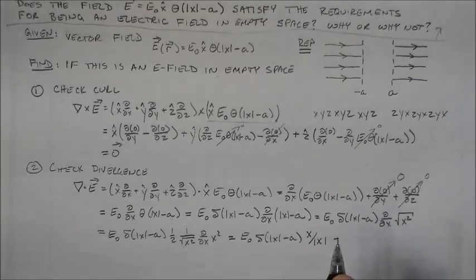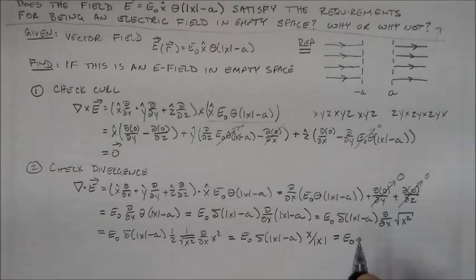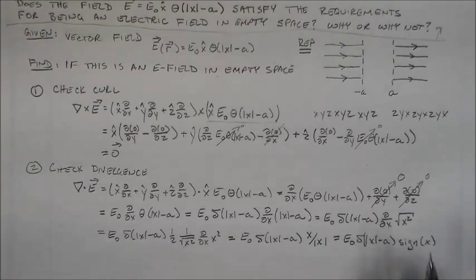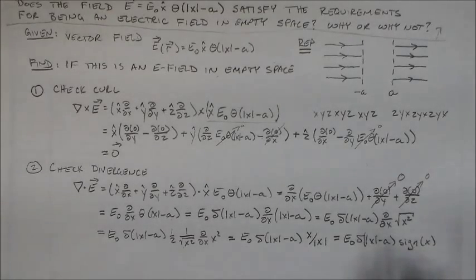So that means e0 is equal to delta of the absolute value of x minus a, times 1 half, 1 over the square root of x squared, times d/dx of x squared, which is going to be 2x. So this is going to be e0 delta of the absolute value of x minus a, multiplied by x over the absolute value of x. Or another way to write this is to write that as just saying it's the sign (S-I-G-N) of x. So either way you want it, but basically you get something like that.